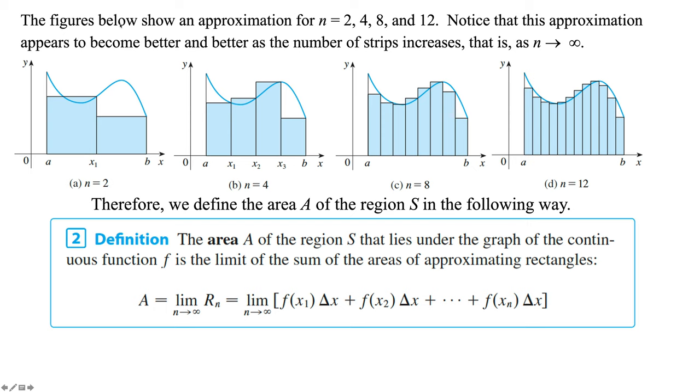All right, so the figures below show an approximation for n equals 2, 4, 8, and 12 rectangles. Notice that the approximation appears to become better and better as the number of stripes increase. That means your number of rectangles. That is, if we can get the number of our rectangles to approach infinity, now we're going to get an exact value for our area. We won't have such big missing chunks, or a lot of overestimation, you know, whatever the case may be.